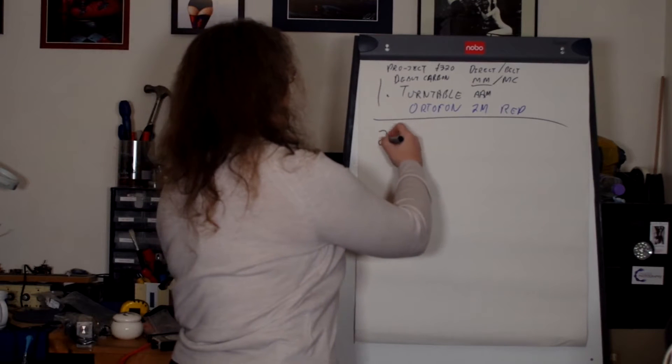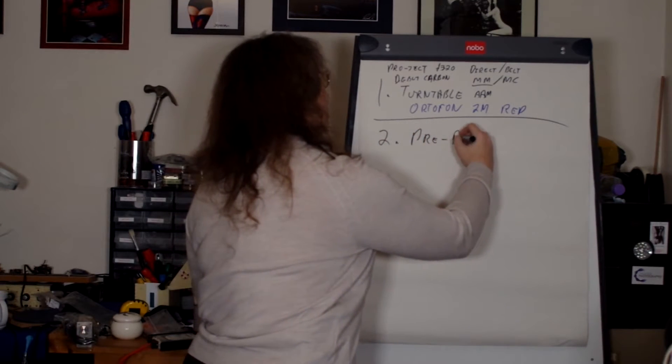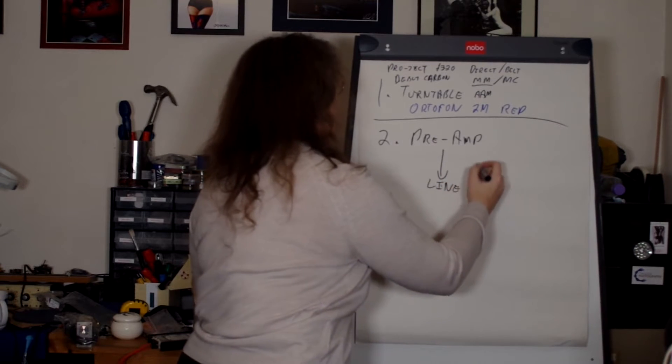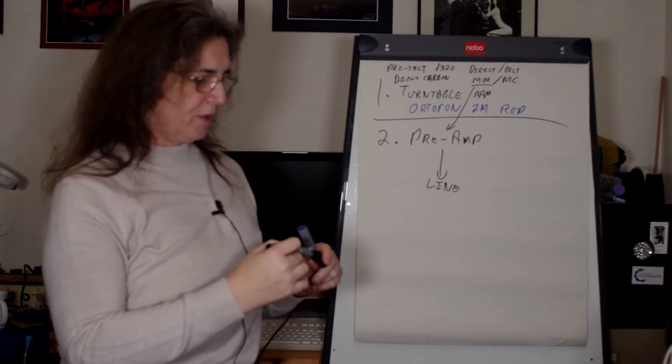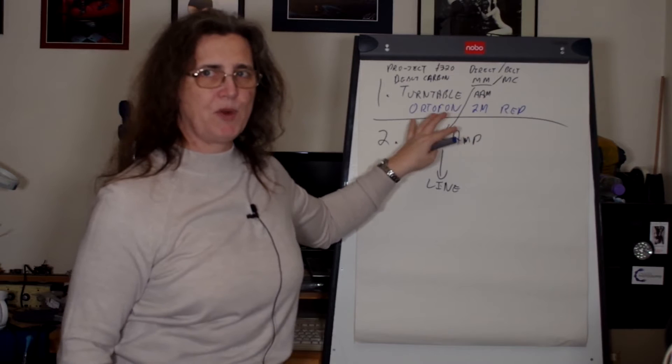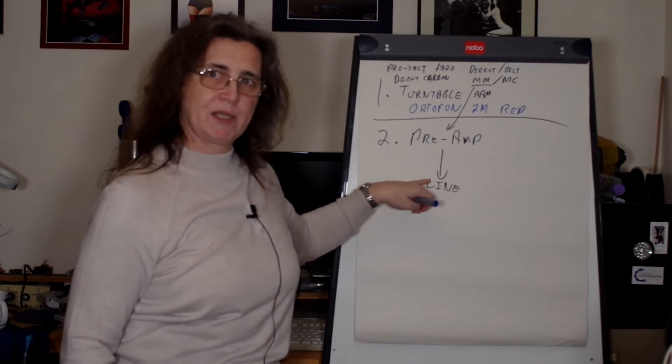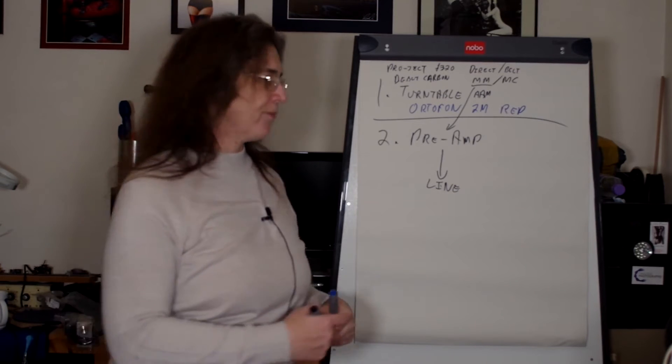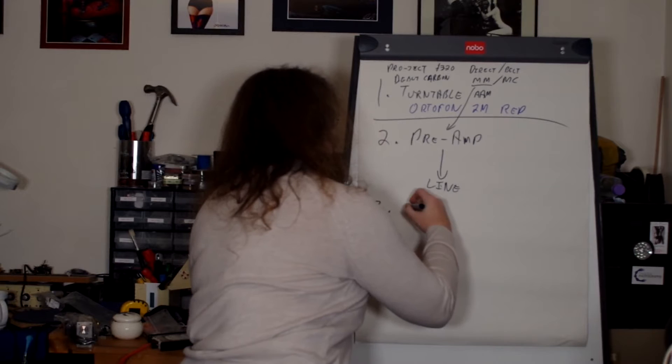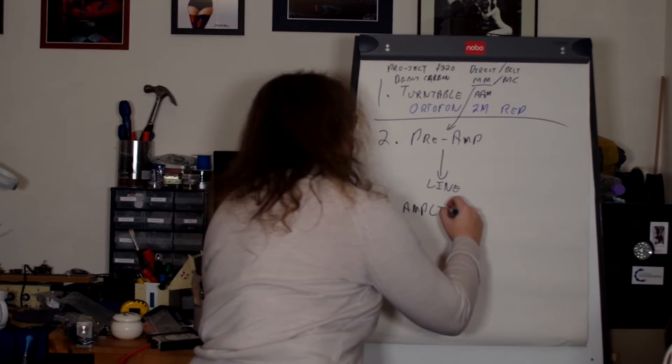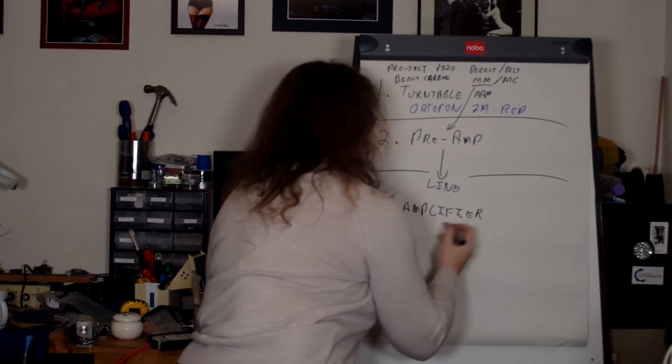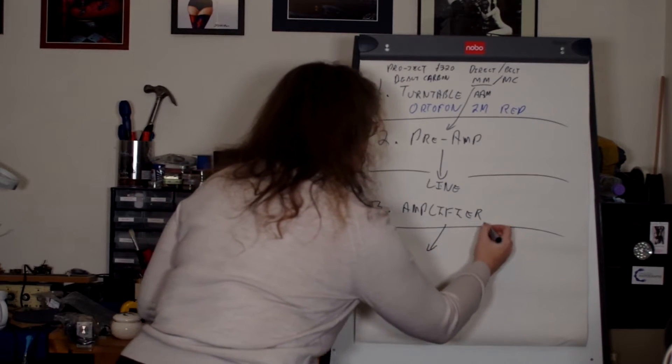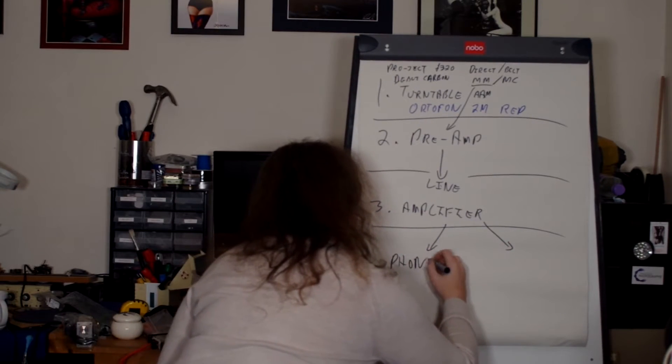The next thing you've got is your preamp. The preamp will typically output a line signal. The cartridge will not be putting out very much of a strong signal. So you need a preamp involved in order to get it out to a line level signal. You've heard me talk about this before when I was talking about the headphone amplifiers. Then, three, you've got your main amplifier. Well, I'll just call it amplifier. Your general purpose amplifier, which will then drive a number of things. And then your choice is a number of things off there. Either phones or speakers.